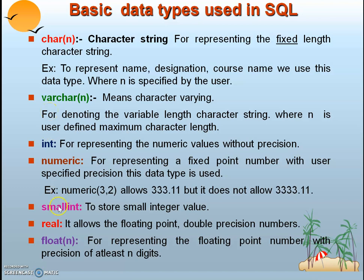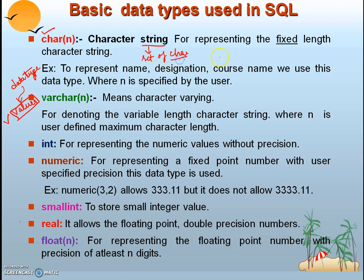First, let's understand what is meant by a data type. A data type is a data item which defines the type of values that can be inserted into it in a programming language. The first type is CHAR(n). This data item will accept only a string or a set of characters — essentially alphabets. For example, a person's name is a collection of alphabets, so it is called a string.